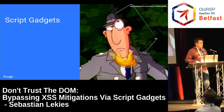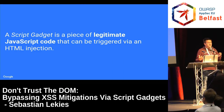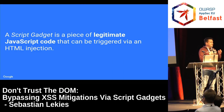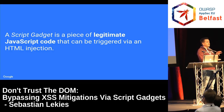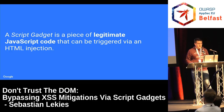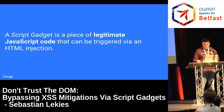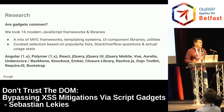To summarize: a script gadget is a piece of legitimate code in your page that can be triggered via an HTML injection. By injecting a benign-looking element, you can execute code through a function that performs a security-sensitive action. The first question we asked ourselves was: are these gadgets common?